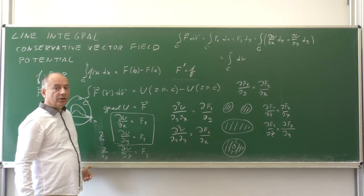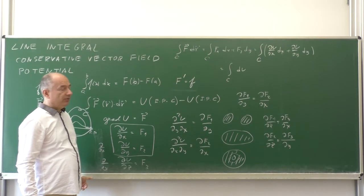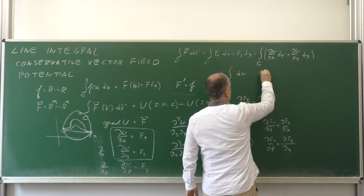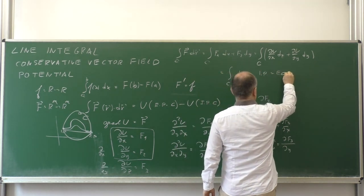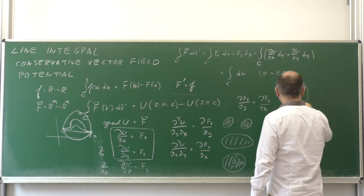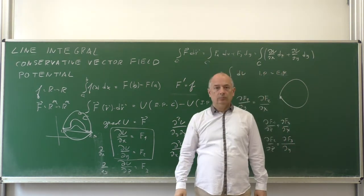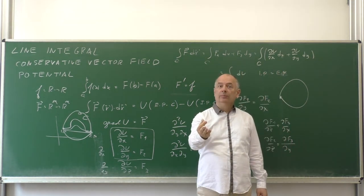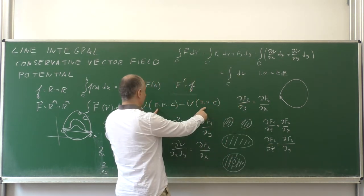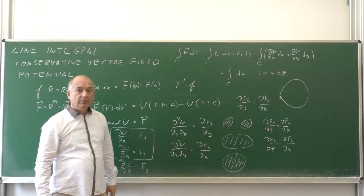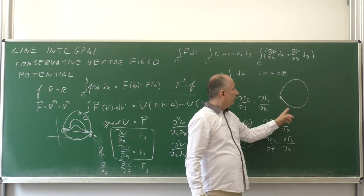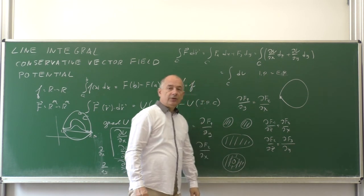One more very useful consequence: if the curve is closed, meaning the initial point equals the end point, then the integral equals zero, because you subtract two equal values. Therefore, the line integral of a conservative vector field over any closed curve is zero. We will illustrate all these results in exercises.